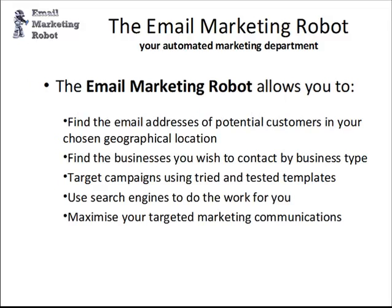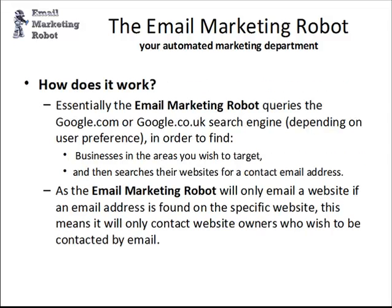Then the robot gets to work. It finds email addresses of potential clients and sends them an email using a template that you can customize. It uses search engines to do the work, so it doesn't involve buying expensive or out-of-date email lists. Because it uses data on actual clients' websites to find contact details, you know it's going to be up to date and your emails are going to get through.